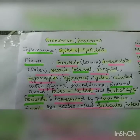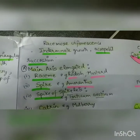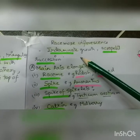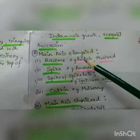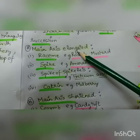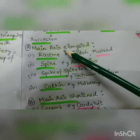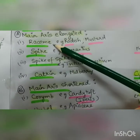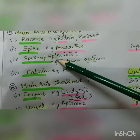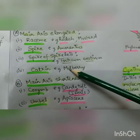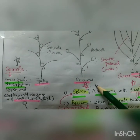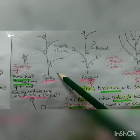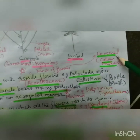Before I move to the flower, I just want to explain what a spike of spikelets is. We have racemose inflorescence - yesterday we did cymose, which has indeterminate growth. In cymose we have basipetal order, but here we have acropetal succession. The first type is where the main axis is elongated - it includes raceme, spike, spike of spikelets as in wheat, and catkin. Racemes have pedicellate flowers; spikes have sessile flowers, and if those sessile flowers are unisexual, it is called a catkin.